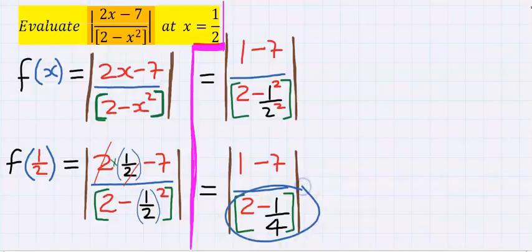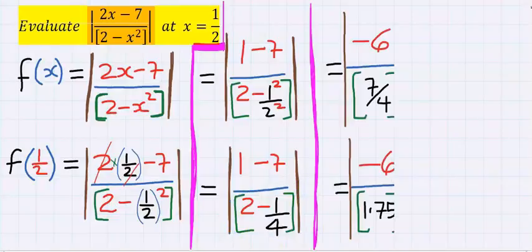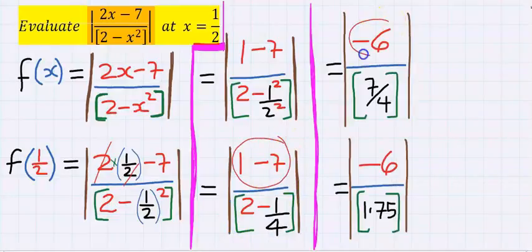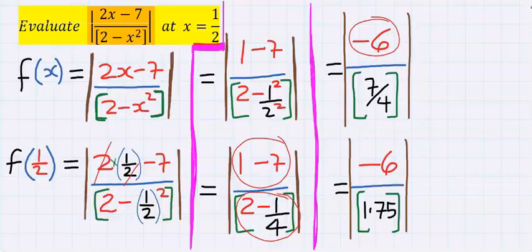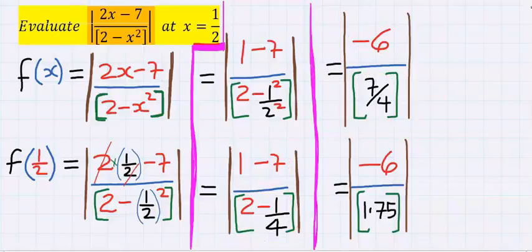Next, this will give you minus 6 at the numerator. At the denominator, 2 minus 1 over 4 will give you 7 over 4 inside the greatest integer function, and 7 over 4 is something like 1.75 to two decimal places.